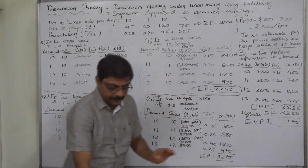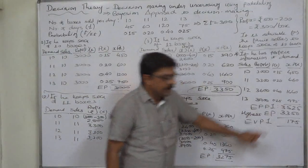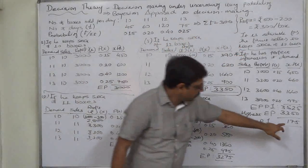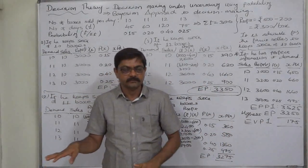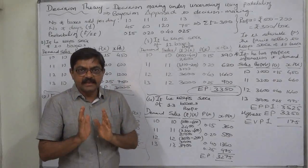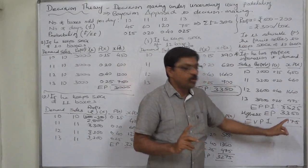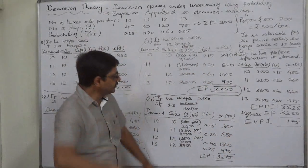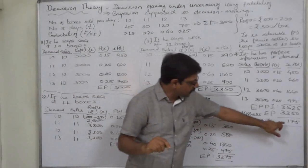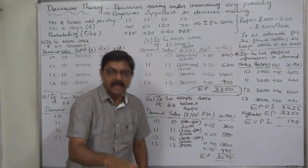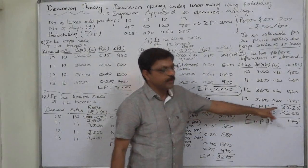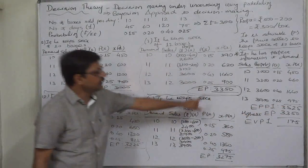The interpretation of this amount is: if he can gather perfect information about the level of demand every time at the moment of placing an order to his supplier, and if that information costs Rs. 175 or less, it will be beneficial to him. If he can gather perfect information at a cost less than Rs. 175, it will add to his extra profit. So this Rs. 175 is the Expected Value of Perfect Information — the maximum he should pay.